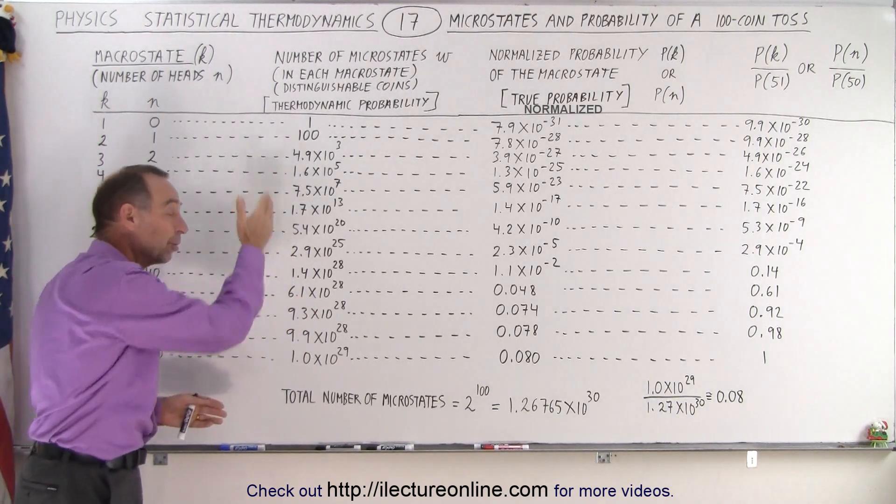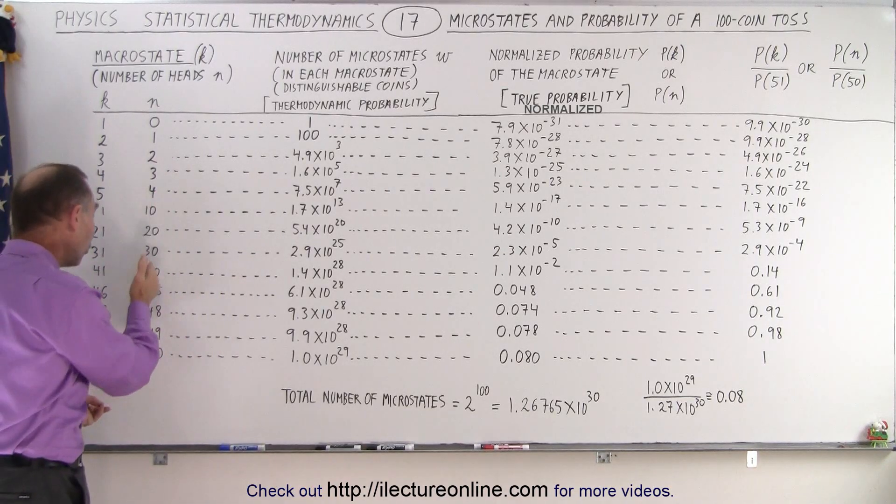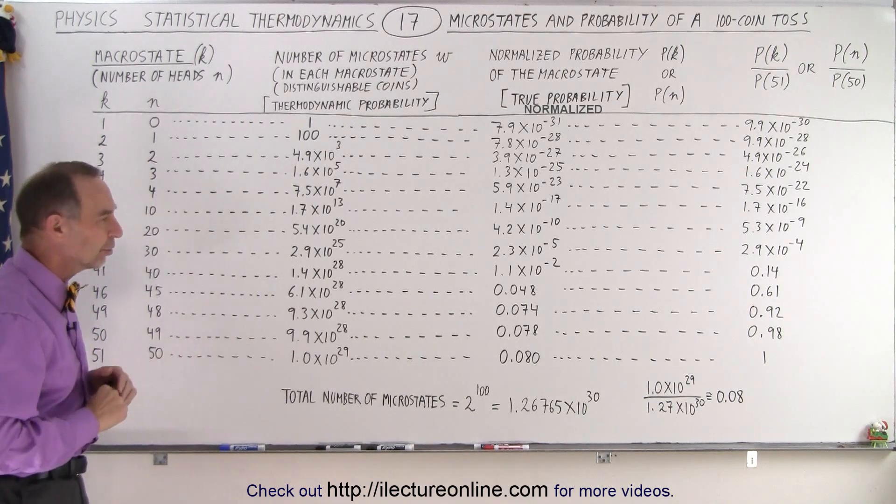And therefore, the numbers get to be humongous when we start talking about 10 coins having heads or 40 coins having heads. You can see the numbers get quite large.